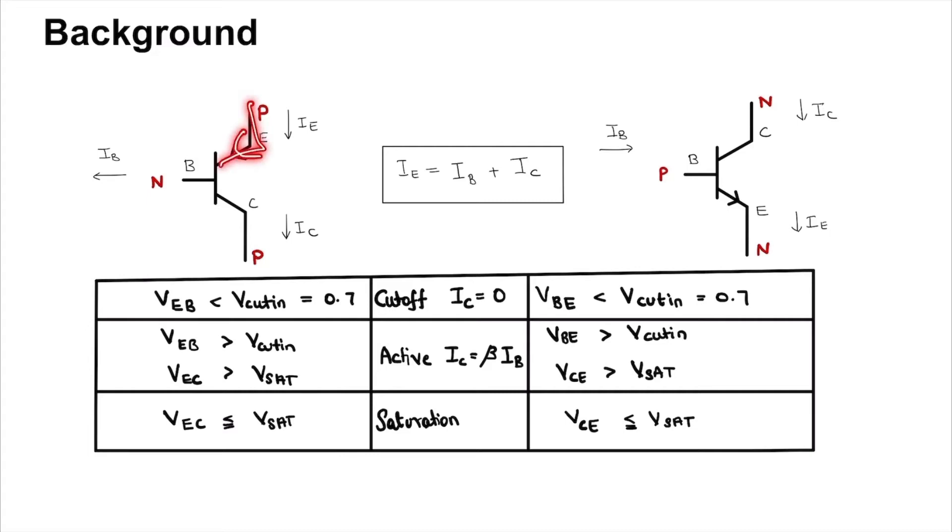The positive direction of current is always given by the direction of the arrow, which in this case is into the emitter and in this case is out of the emitter. IE, IB, and IC have these positive directions for PNP and these for NPN.